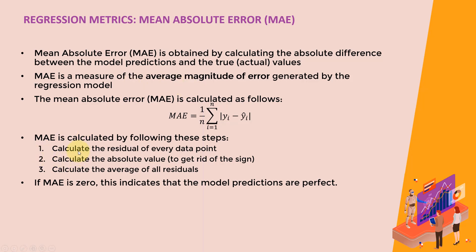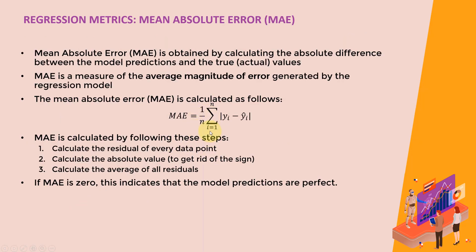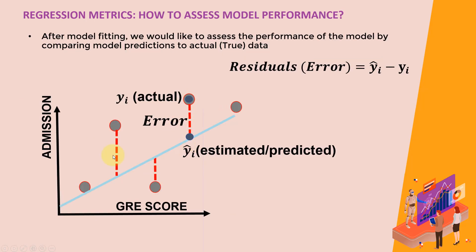The steps are: calculate the residuals at every point, then calculate the absolute value — basically get rid of the sign, so if it's negative it becomes positive. Sum up all these values and then divide by N, the overall number of residuals or samples. If the mean absolute error is zero, that means the model predictions are perfect — all the data points lie on the line, indicating there is no error.